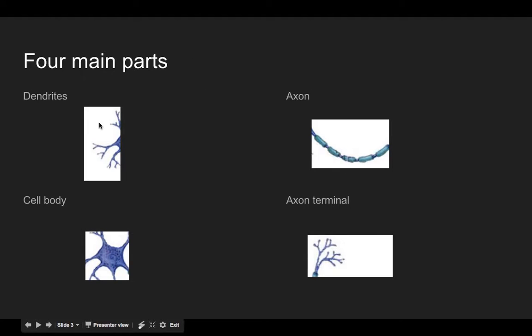The first is the dendrites, which was that beginning part. Then you've got the cell body. The axon, which is this very long, slender section. And the axon terminal.